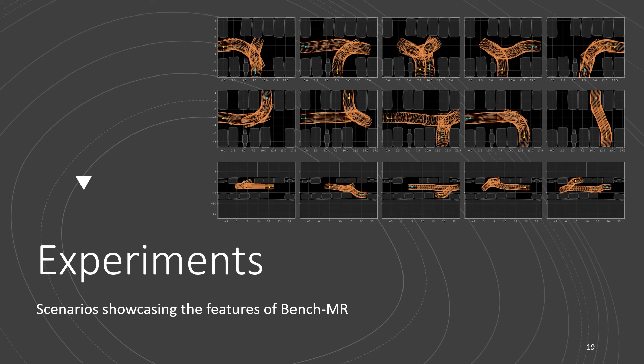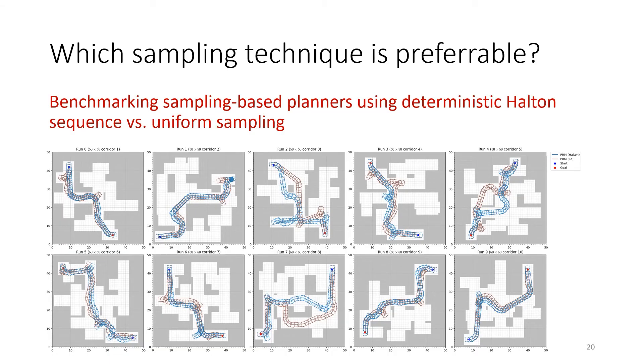We now demonstrate in detail some experiments where BenchMR provides useful insights about the behavior of sampling-based motion planners. In a first example, we compare different sampling techniques, namely the deterministic Halton sequence and the uniform distribution for sampling states.